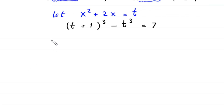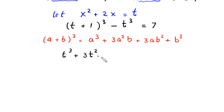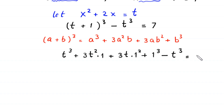By using the algebraic identity (a + b)³ = a³ + 3a²b + 3ab² + b³, (t + 1)³ becomes t³ + 3t²·1 + 3t·1² + 1³ minus t³ = 7.